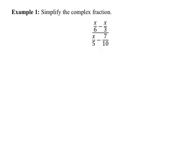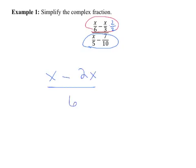The first problem has a complex fraction. Method 1 tells us to find a common denominator up top and then a common denominator down below. On the top, the common denominator would be 6, and we get that by multiplying by 2 over 2, making this x minus 2x all over 6 up top. In the bottom, the common denominator is 10, so we multiply by 2 over 2, making this 2x minus 7 all over 10.